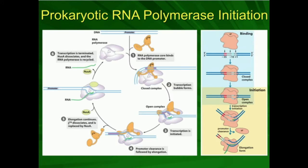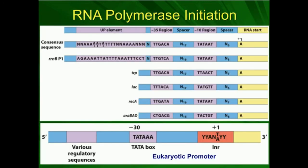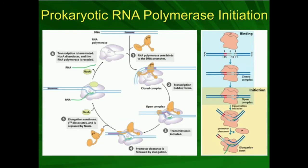Let's go over how this works in prokaryotes, the simplest system. RNA polymerase does not initially bind to the DNA. The first thing that has to happen is the sigma factor binds — specifically to both the minus 35 region and the minus 10 region of prokaryotic DNA. This one specifically is sigma 70. There are three main types: sigma 70, sigma 38, and sigma 32. Sigma 70 is for transcription of housekeeping genes, sigma 32 is for heat shock proteins, and sigma 38 is for when the cell is in starvation.